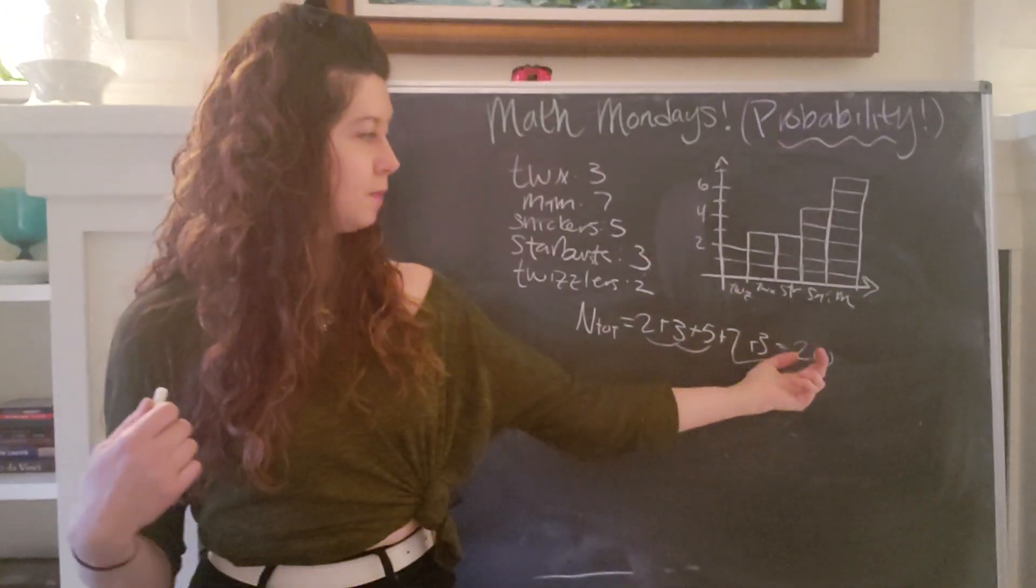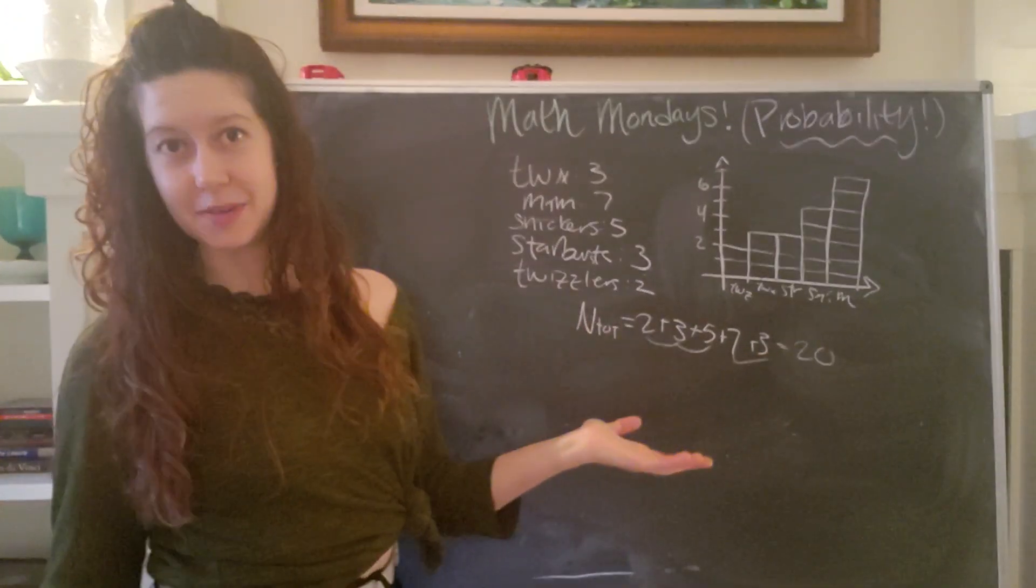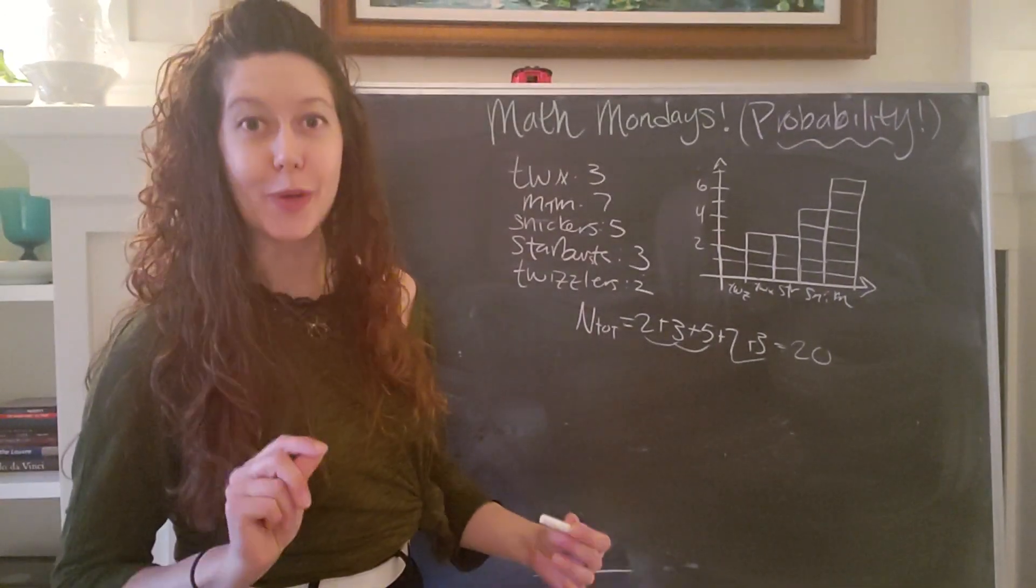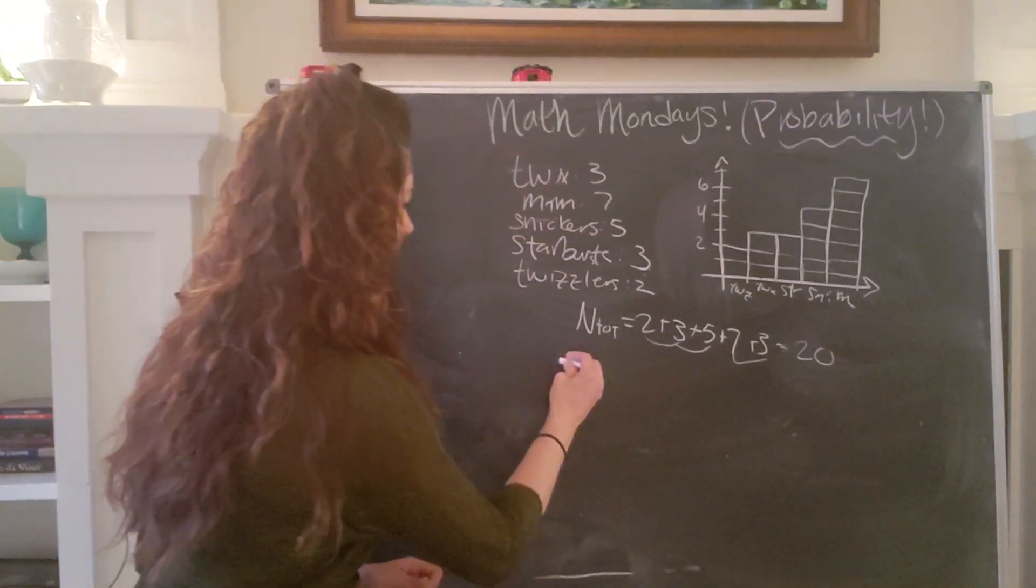And then once we know that, we can start asking specific questions about our bag of candy. Very important. So let's say I reach in there with my oven mitt. I want to know the probability that I'm going to pull out a Twix, because it's my favorite piece of candy.